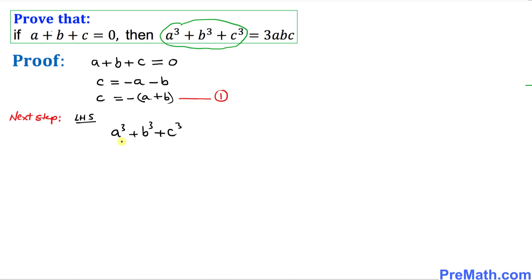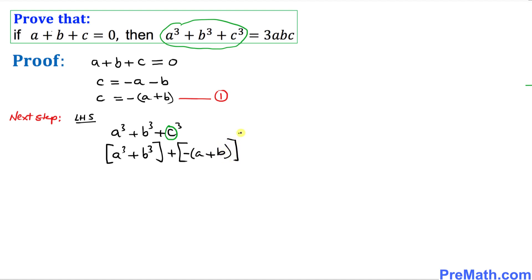Now I'm going to replace c using equation number 1. This expression becomes a³ plus b³ plus, since c equals negative of a plus b, we write it as a³ plus b³ plus negative of a plus b, all cubed. These are very crucial steps.